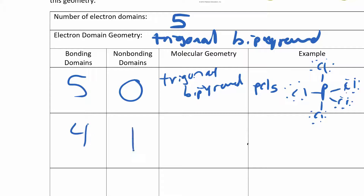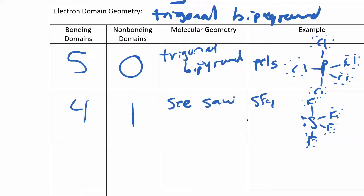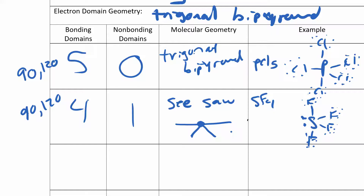You can also have four bonding and one non-bonding for a total of five electron domains, like SF4. This molecular geometry is called a seesaw, or sawhorse. The lone pair occupies an equatorial position — you can't see it but it's still forcing the other atoms into position. The bond angles are 90 and 120.